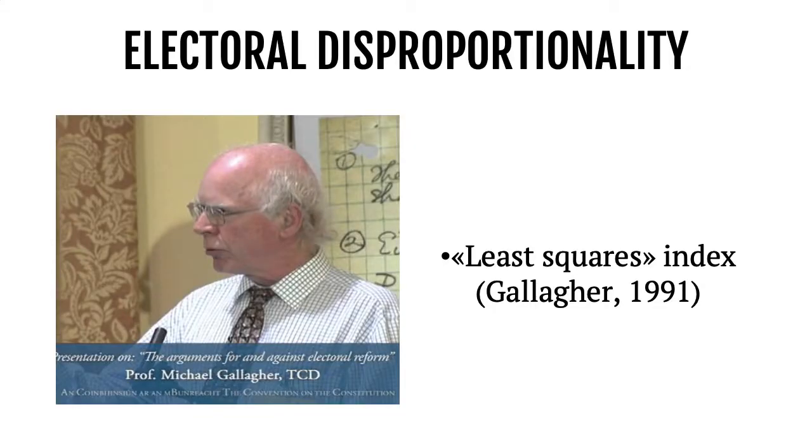Today we are going to learn how to calculate the Gallagher Index of Electoral Disproportionality, also called least squares index, that tries to measure, encapsulate, and capture the level of disproportionality in an electoral system.